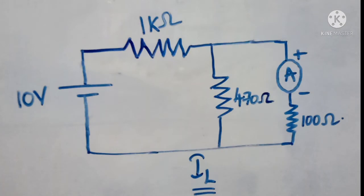The third and last step is the determination of load current. When we want to find the load current, we need to connect the ammeter in series with the load resistor — the load resistor being the one through which we want to find the current using Thevenin's theorem. For measuring Vth, Rth, as well as the load current, we will use a single multimeter operated in various modes.